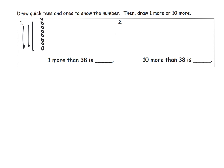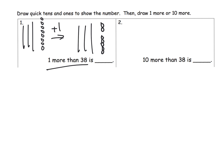It says one more than thirty-eight, so I'm going to add one to that. We're going to have our three tens still, but now instead of having eight ones, we're going to have nine ones: one, two, three, four, five, six, seven, eight, nine. And there you go.